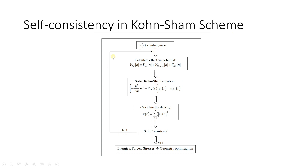In the self-consistency scheme, there is a cycle that is followed. First, you take an initial guess for the electron density. Using this electron density, you calculate the effective potential — the Kohn-Sham potential — using the equation V_KS = V_external + V_Hartree + V_xc, where V_xc is the exchange-correlation potential.